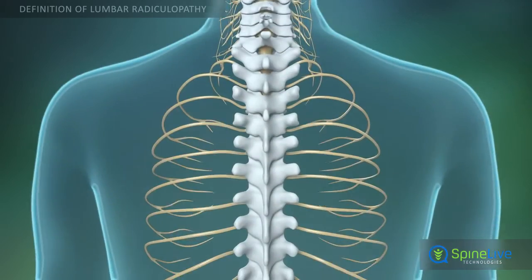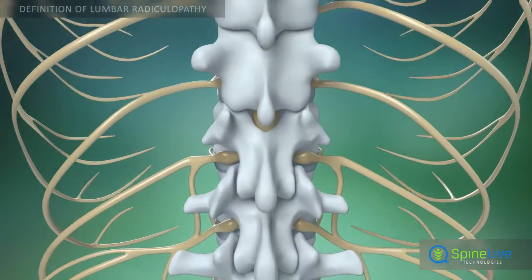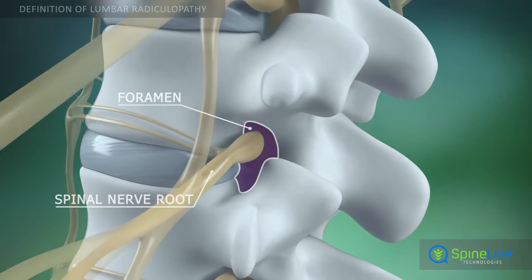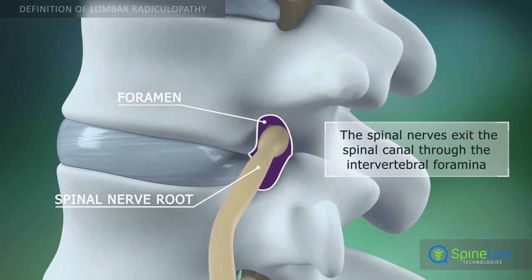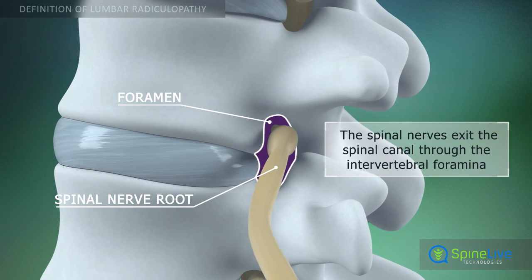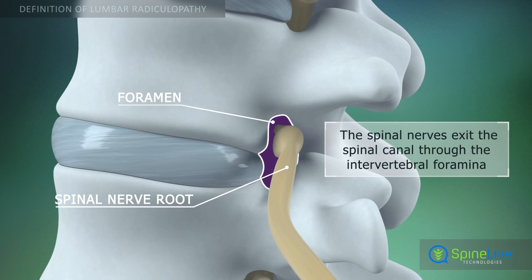The spinal nerves branch off your spinal cord in pairs and travel through small openings between your vertebrae called intervertebral foramina.